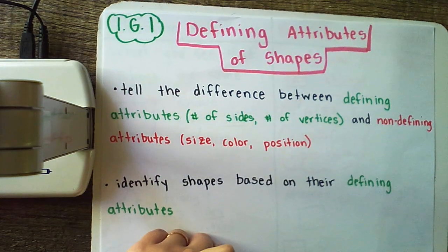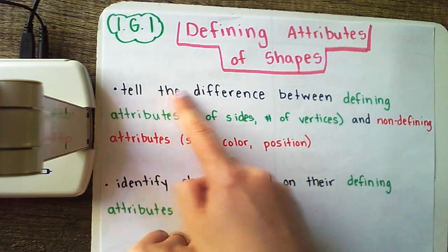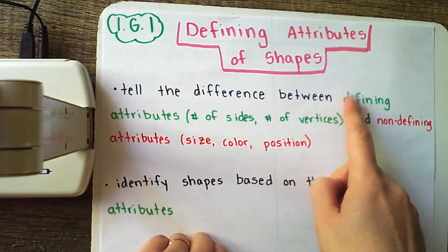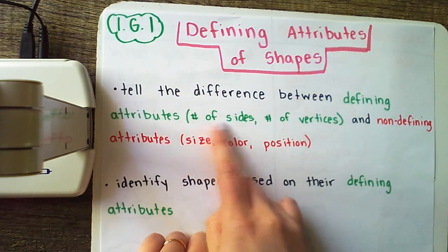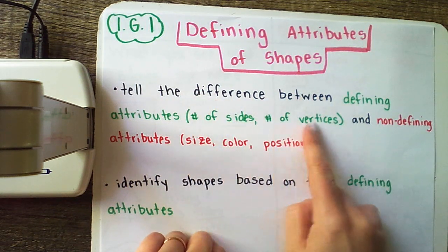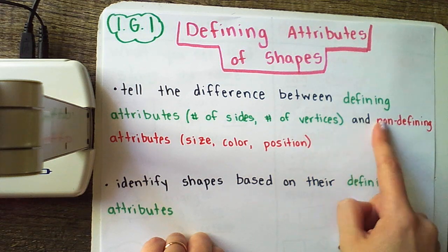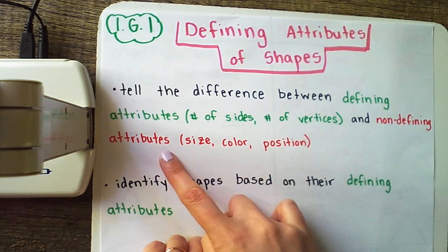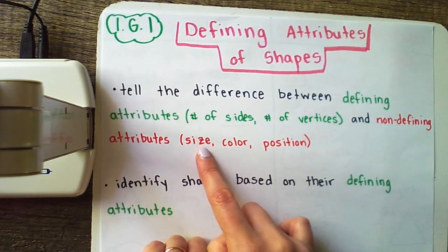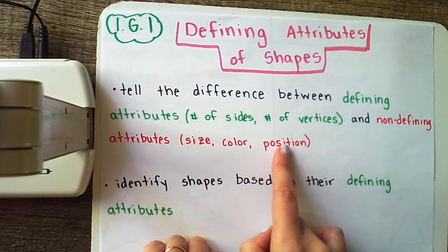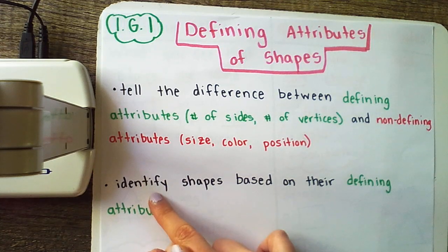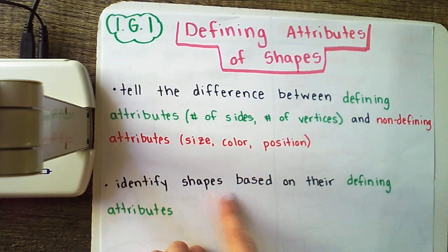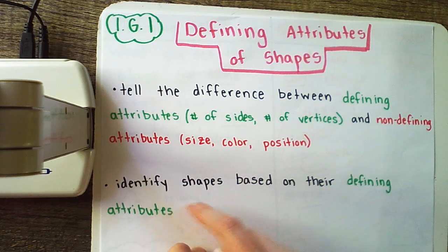Here's what we're talking about. We're going to be able to tell the difference between defining attributes, which are the number of sides or the number of vertices, and non-defining attributes — size, color, and position in a shape. And we're also going to be able to identify shapes based on their defining attributes.